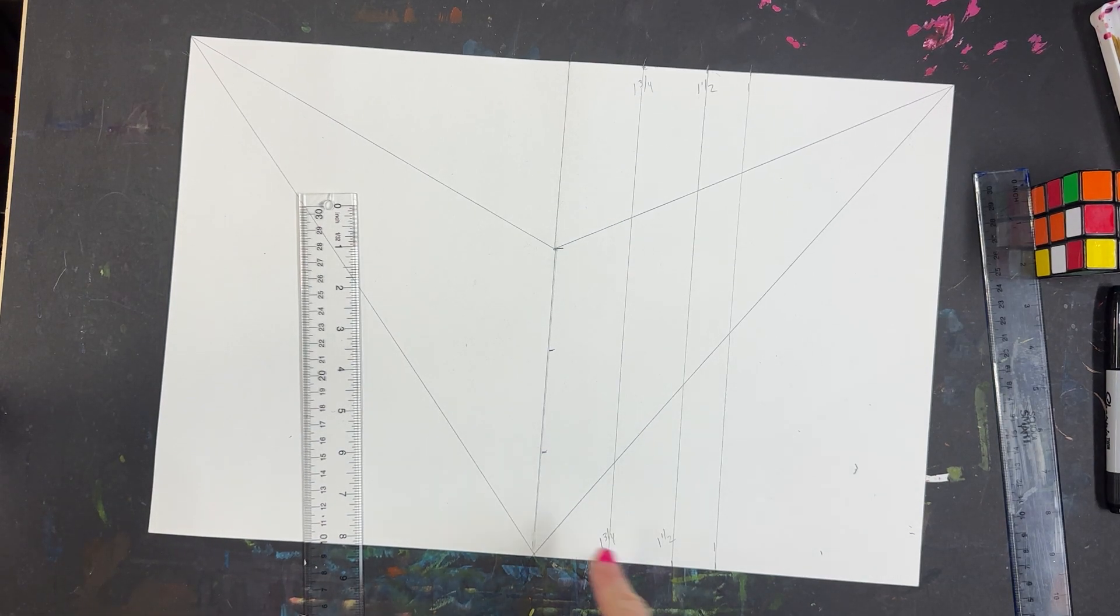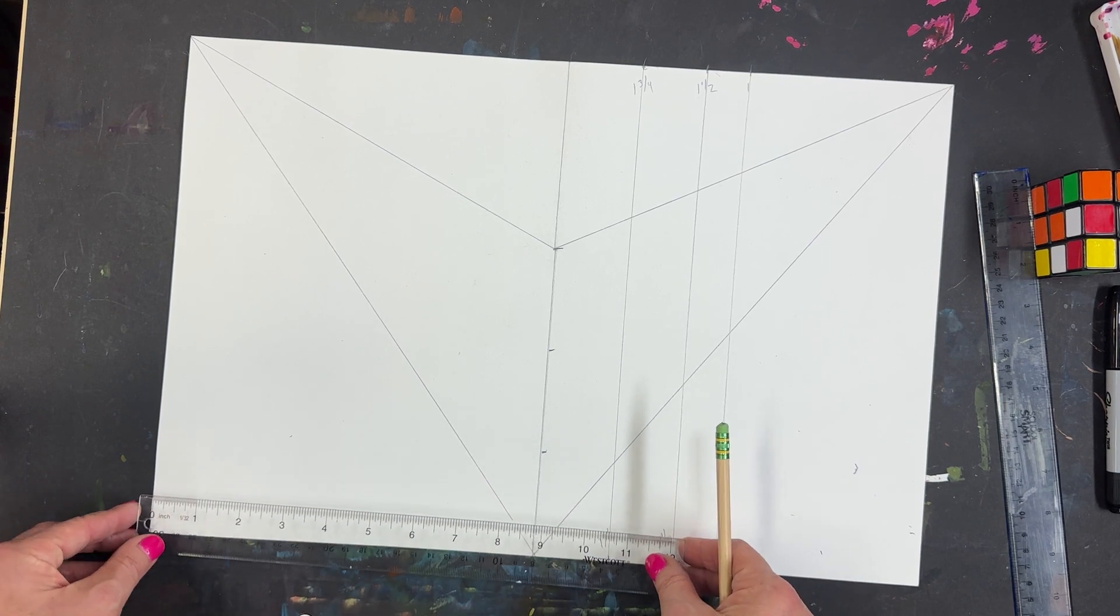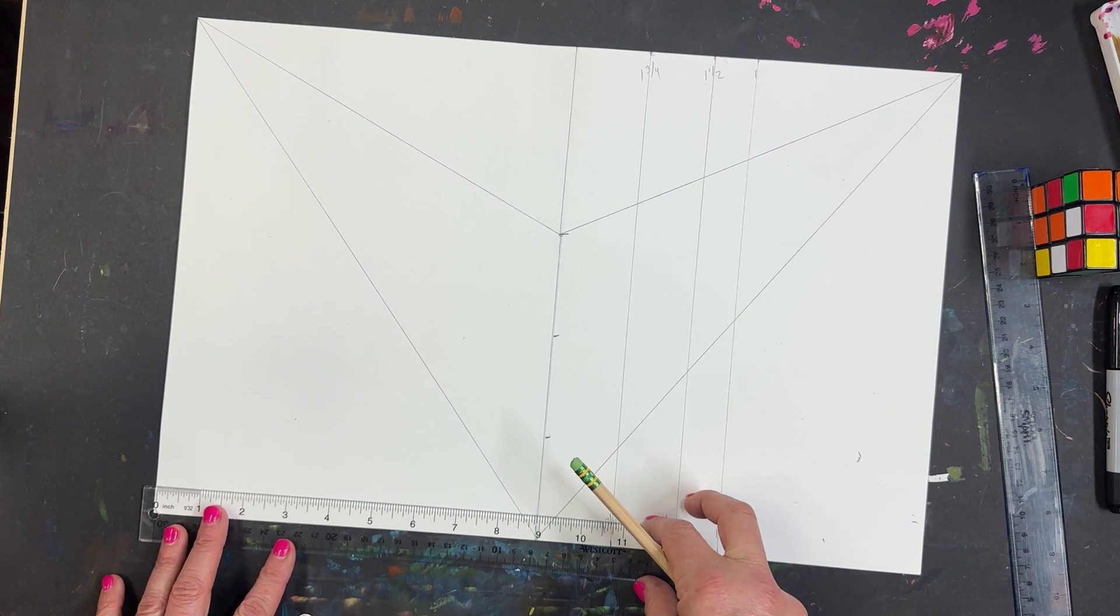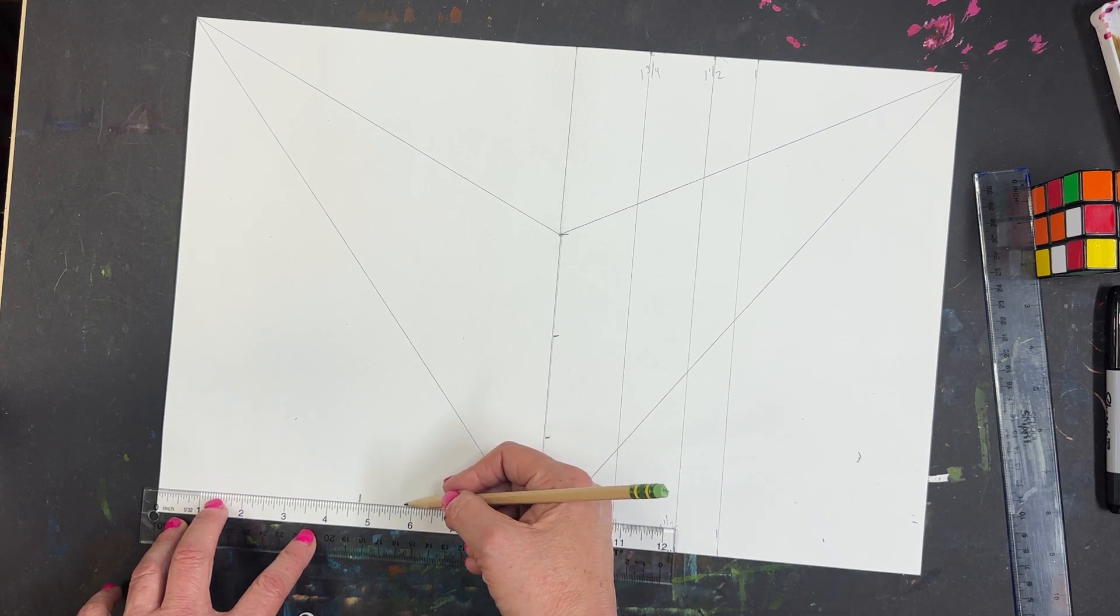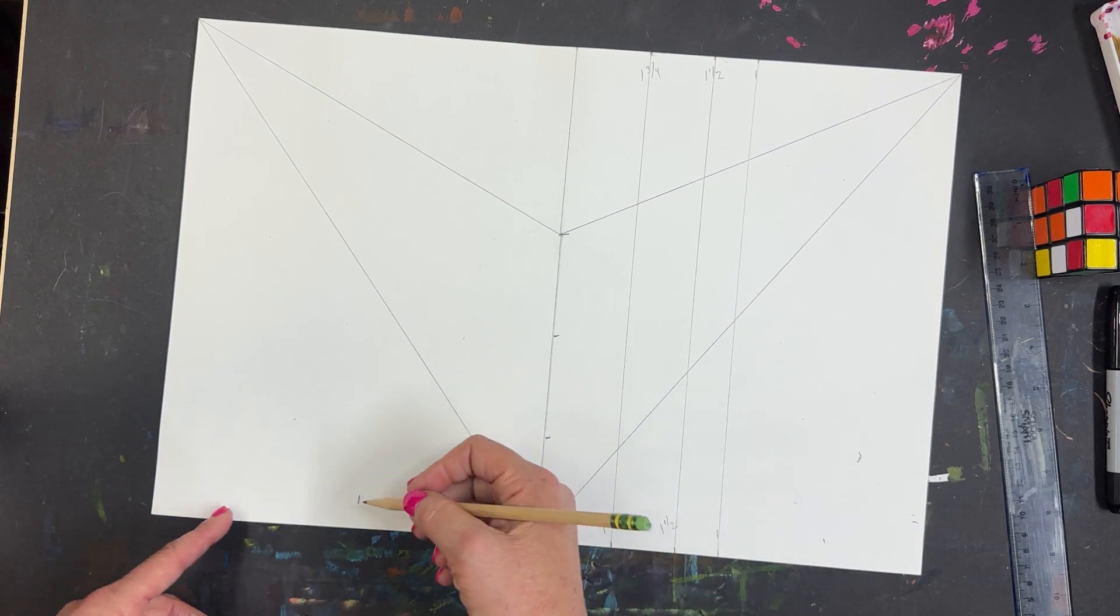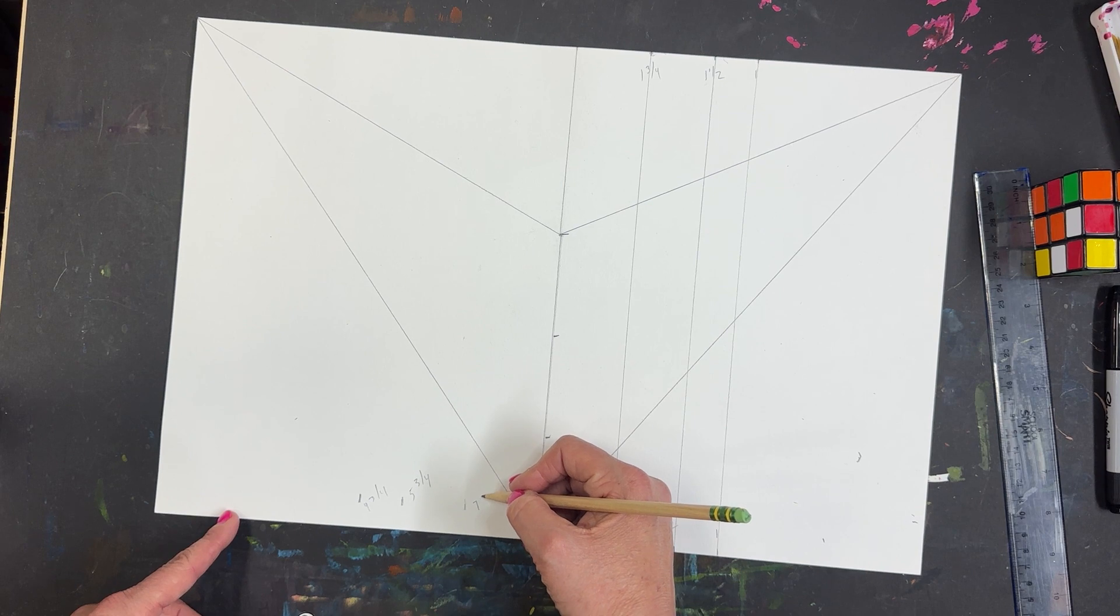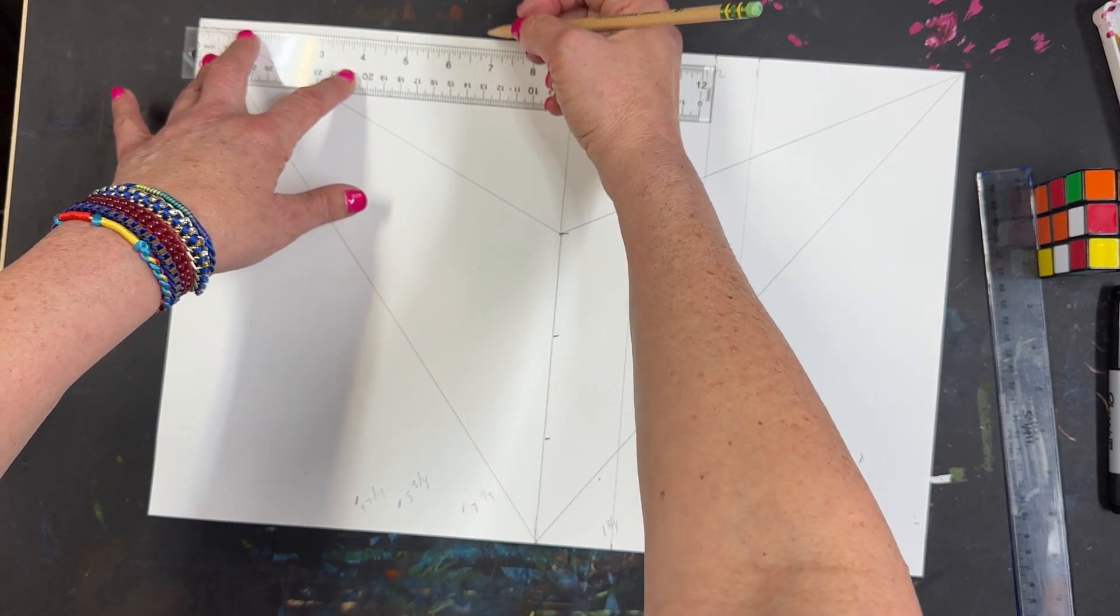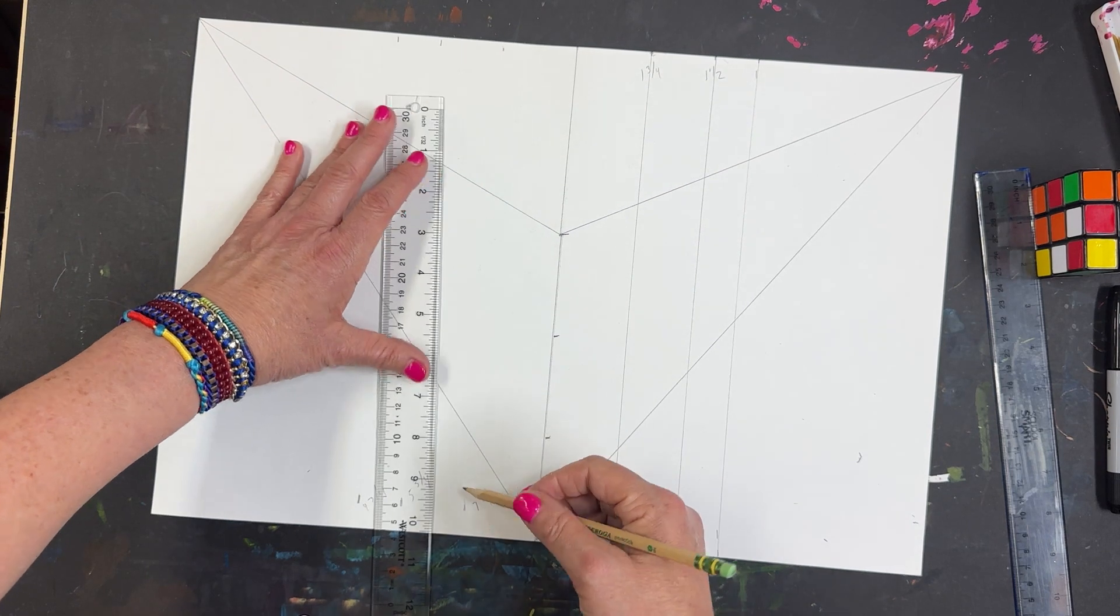Now we're going to do the same thing on the left side. I'm starting from the midpoint here. I'm going to measure a little differently on this side. I'm going to do 4¾, 5¾, and 7¼. I'm going to raise my ruler all the way up here. Make sure the zero is on the line. I'm going to put a little mark of 4¾, 5¾, and 7¼. And I'm going to match up these lines.